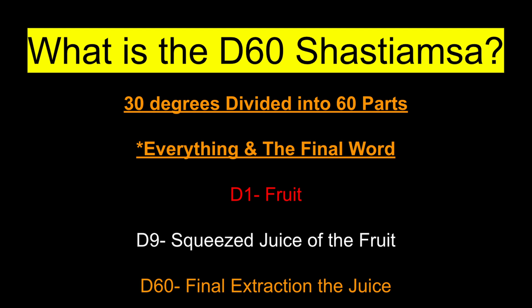Another analogy my teacher gave: the D1 chart is like fruit. The D9 chart is if you were to squeeze that fruit — all of the juice, all of the essence would come out. But the D60 is the last drops of the fruit, the final extraction of the juice. This is showing us the final word in the chart. We see positions in the natal chart which shows us how these karmas are unfolding. However, it's important that we also see those positions in the D60 chart to understand what is the final conclusion of that karma.